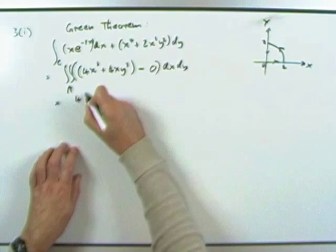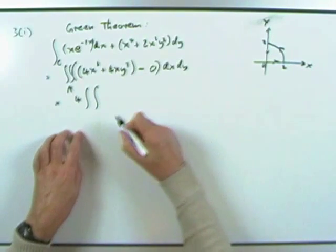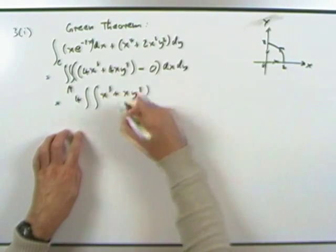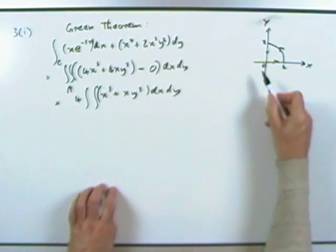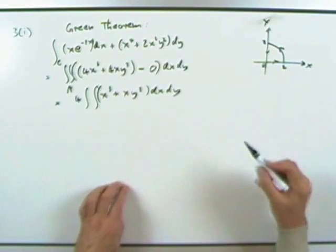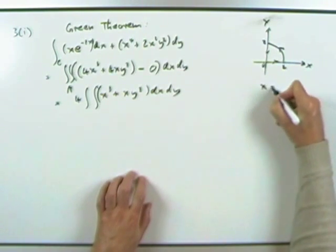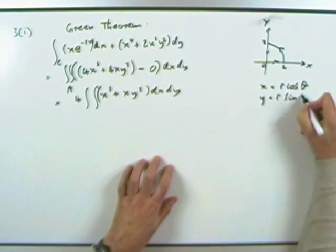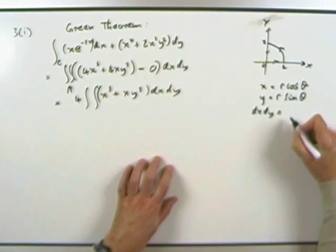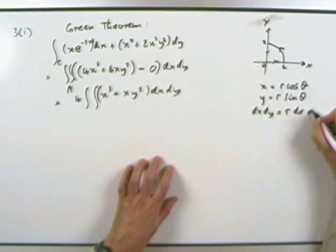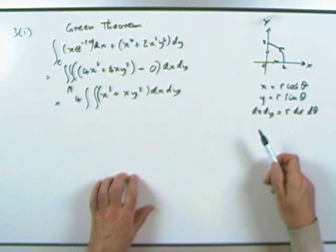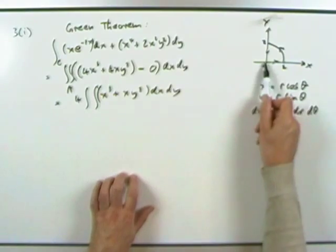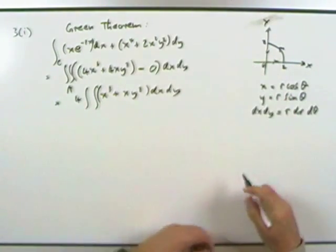There's a 4 that can come out, so I've got 4 times the area integral of x³ + xy² dx dy. But it's a circular region, so you might as well switch to polar coordinates, where x = r cos θ, y = r sin θ, and the area element dx dy is r dr dθ. R is going to go from 0 to 2, and θ from 0 to π/2.